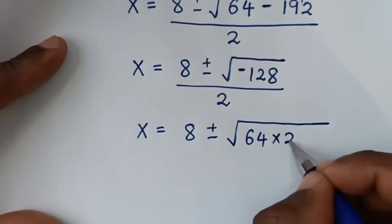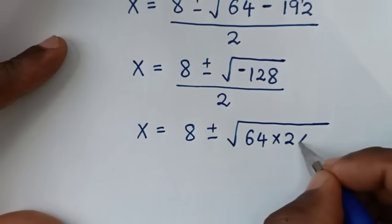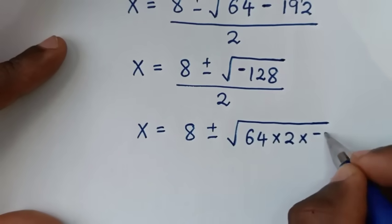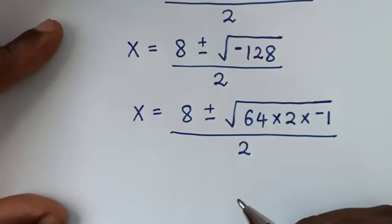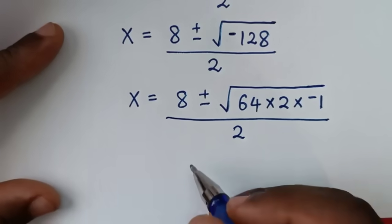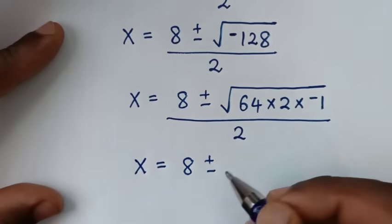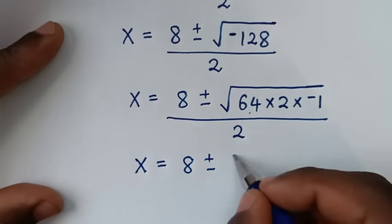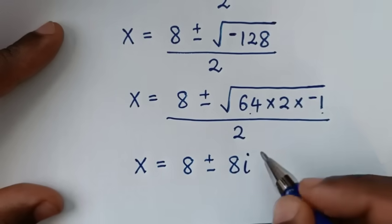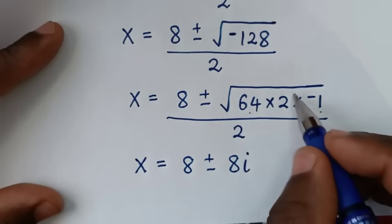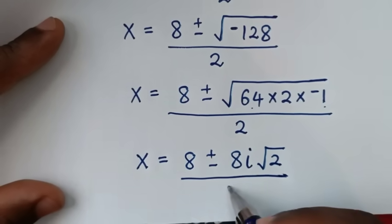Because 64 times 2 is 128. Then times for this negative times negative 1. Then over 2. Then it will be x is equal to 8 plus or minus square root of 64, it is 8, square root of negative 1, it is i. Then times square root of 2. Then over 2.